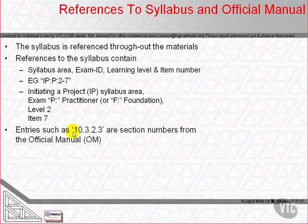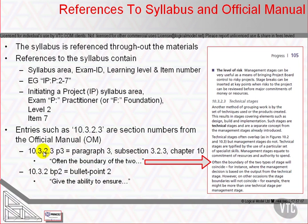Any time you see an entry such as 10.3.2.3, these are section numbers from the official manual. So within chapter 10 — chapter 10 is progress — if we look at 10.3, and within 10.3 at 2.3, we get technical stages. So 10.3.2.3 is the section about technical stages within the official manual.